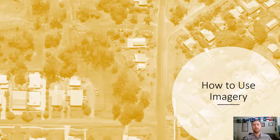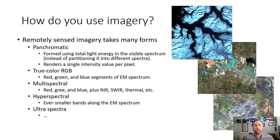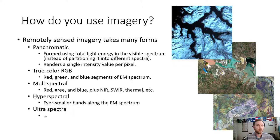Remotely sensed imagery takes many forms. We've discussed multi-spectral imagery and RGB bands, and briefly touched on hyperspectral. But it also includes panchromatic, which we might take for granted — it's what we see most frequently in Google Maps or Google Earth. A panchromatic image is formed using total light energy in the visible spectrum rather than dividing it into various bands. It's essentially a single value per pixel, often a 0 to 255 digital number rendered in black and white, but it can be colorized.